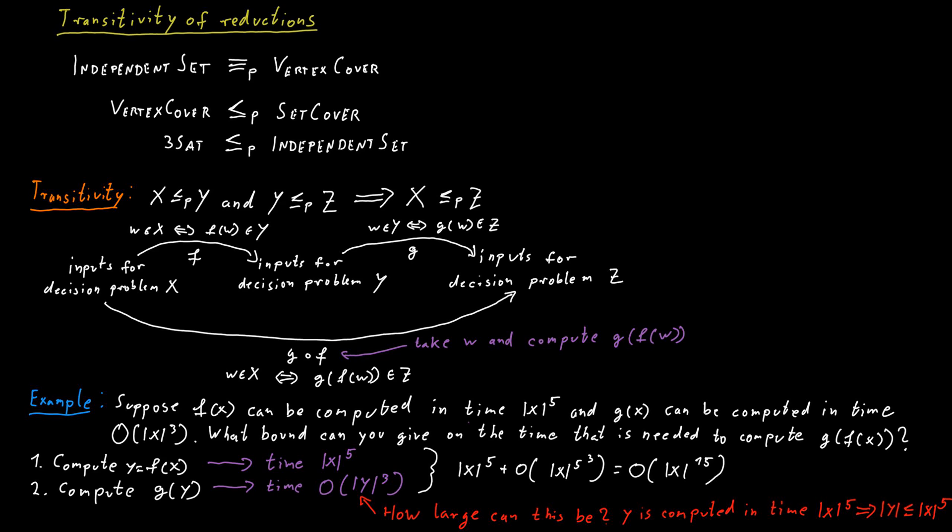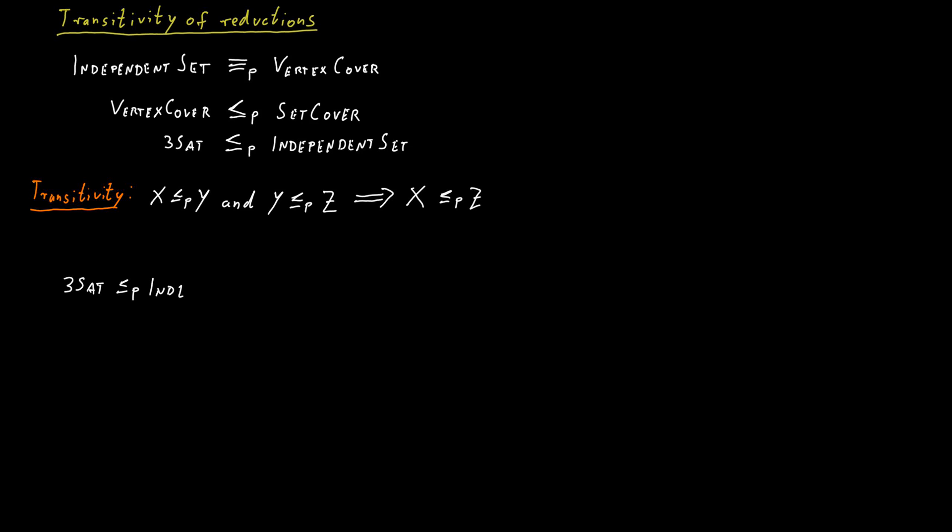In any case, we can now use this transitivity of the reduction to make further conclusions from the results we already have. So we know 3-SAT polynomial time Karp reduces to independent set, and we know that independent set polynomial time Karp reduces to vertex cover. And we know vertex cover polynomial time Karp reduces to set cover. And because of the transitivity of the reduction, we now have a whole new set of results. We know that 3-SAT also polynomial time Karp reduces to set cover, although we never explicitly showed this.